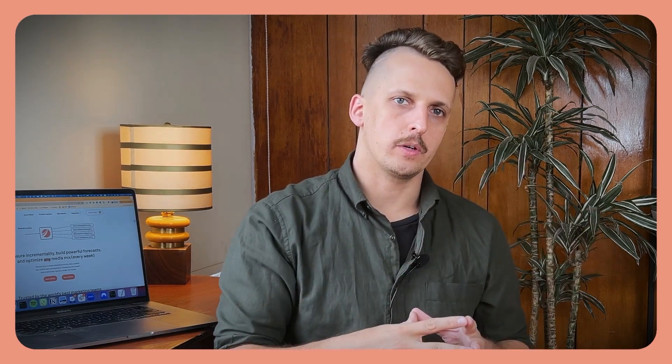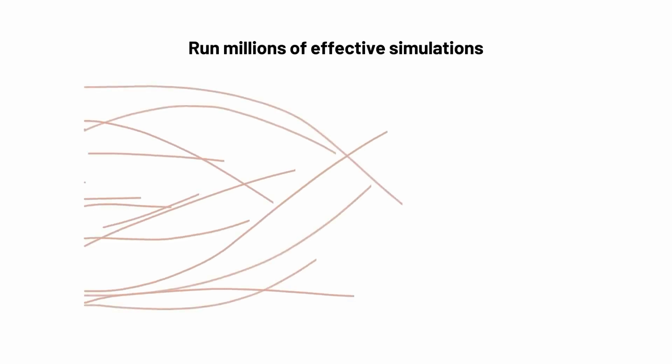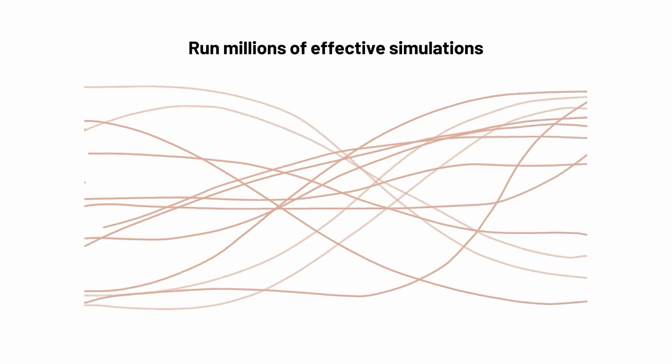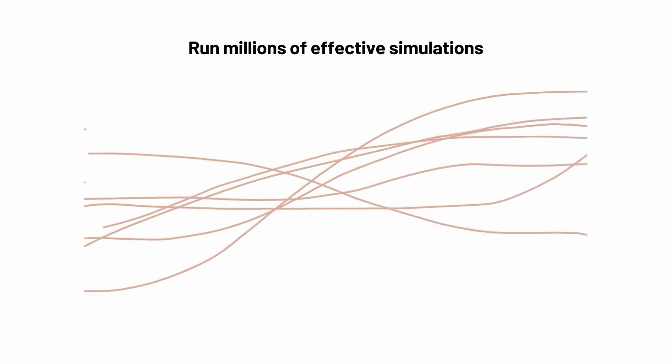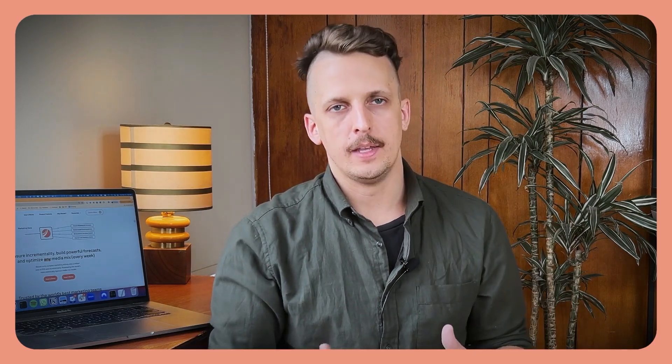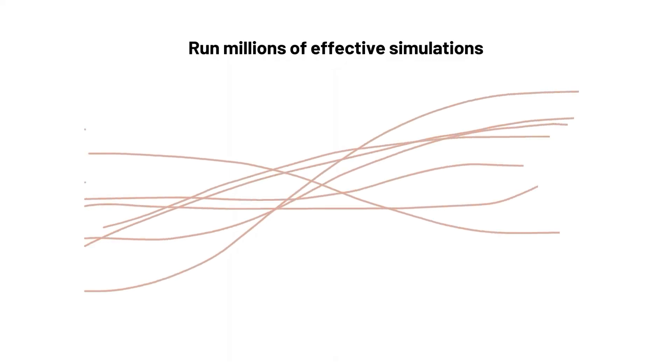Then what the algorithm does is look at the implied revenue or conversions from each of those different worlds and compare that to the actual revenue or conversions. In the vast majority of those simulated worlds, the implied revenue won't match reality — it'll be way off. Actual revenue goes one way but the simulated world goes another, so the algorithm says that world isn't consistent with the data, and it throws that world out. It throws out the vast majority of these worlds.